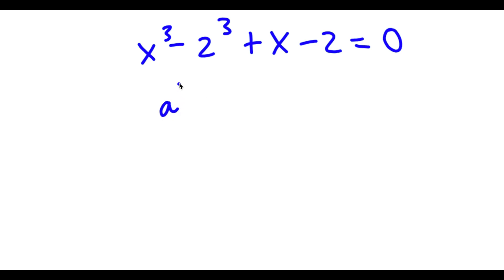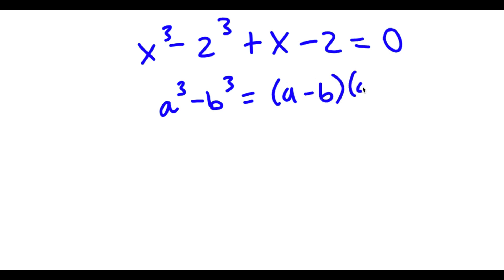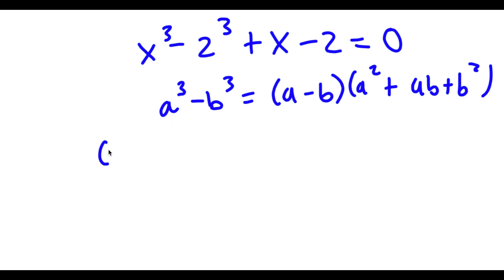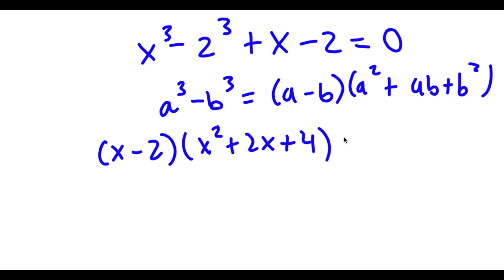Now if I have something in the form a to the power of 3 minus b to the power of 3, this is equal to a minus b times a squared plus ab plus b squared. So in this case, x to the power of 3 minus 2 to the power of 3 can be rewritten as x minus 2 times x squared plus 2x plus 2 squared, which is 4, plus x minus 2 is equal to 0.